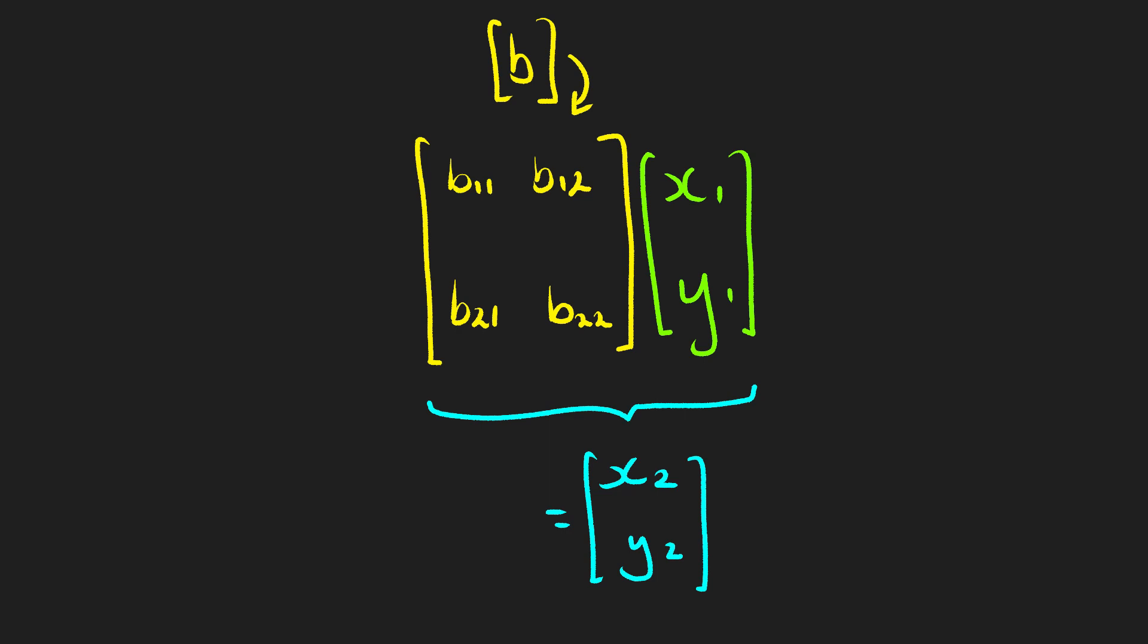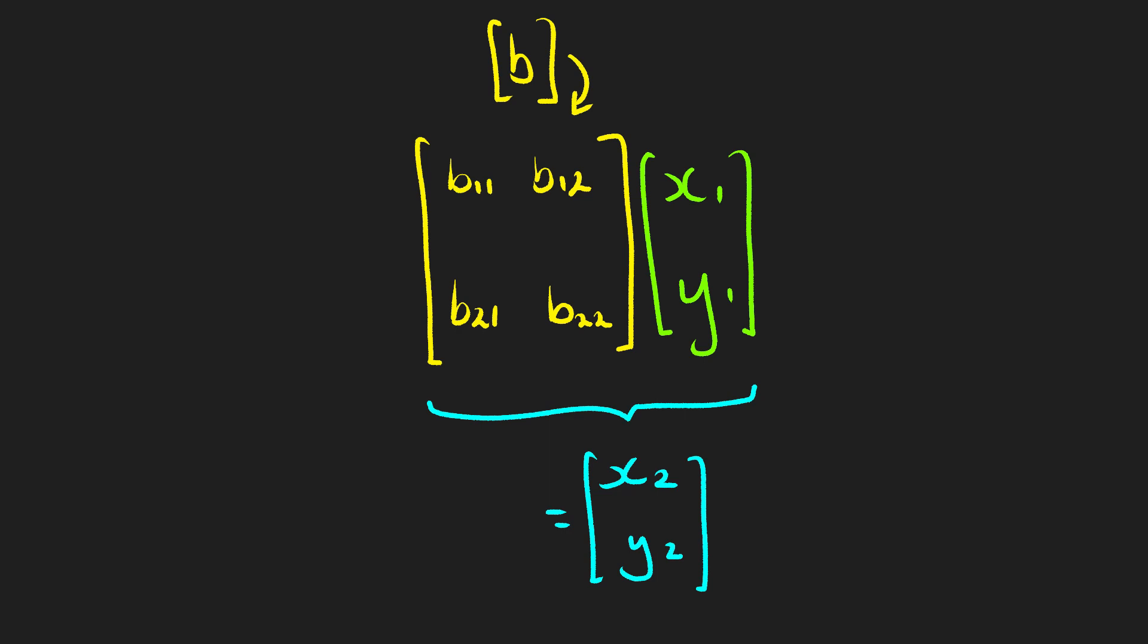And then we've multiplied that result, all of that, by our matrix A, which has then given us our final vector of x3, y3.